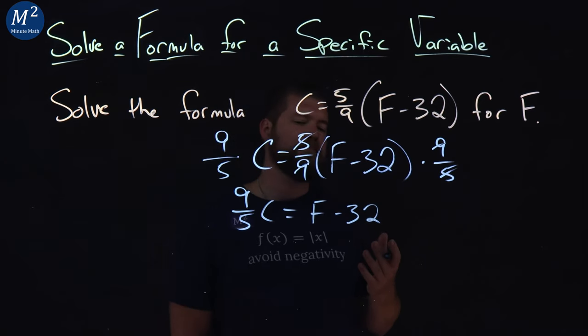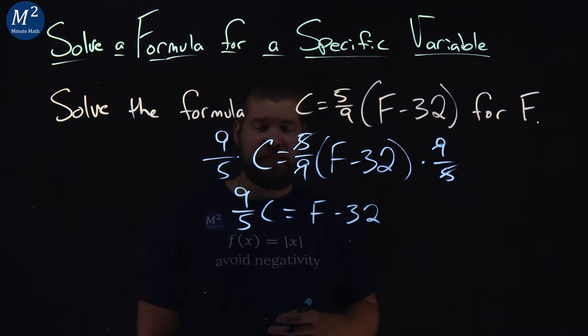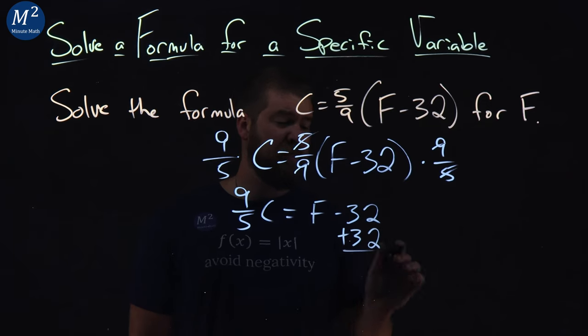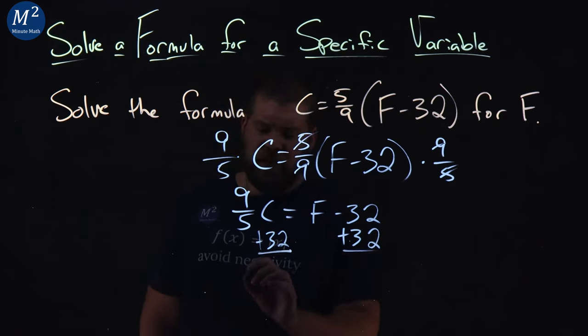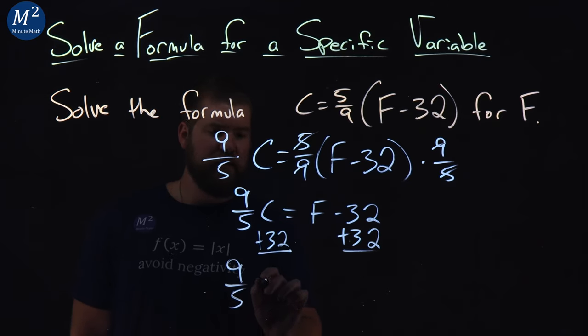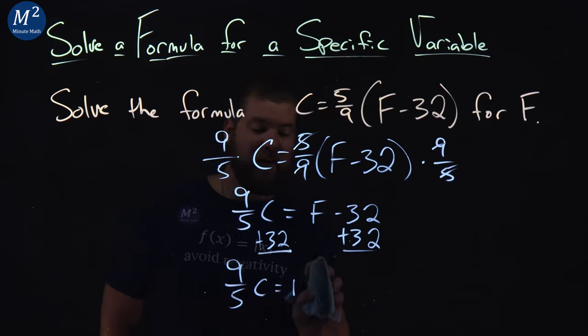Remember, the goal is to get F by itself. Well, now it's pretty easy. We just add a 32, opposite of subtraction's addition to both sides. So we have 9 fifths C is equal to F. Oh, sorry. Oof.